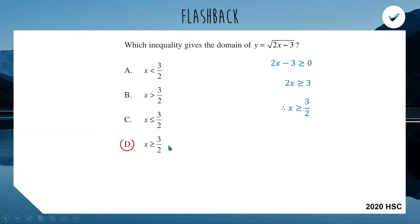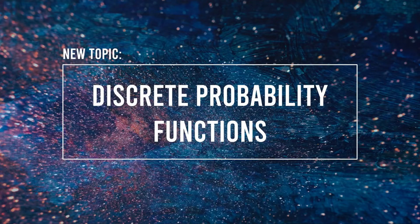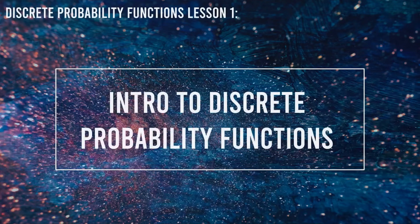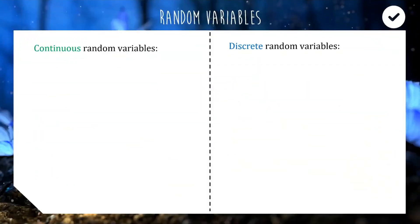We get x is greater than or equal to 3 over 2, which is option D. In today's video we are starting a new topic: a Year 11 Advanced topic called discrete probability functions. Today's lesson is an introduction to what they are and the types of questions you'll encounter. We'll look at two types of random variables: discrete random variables today, and continuous random variables later in Year 12.